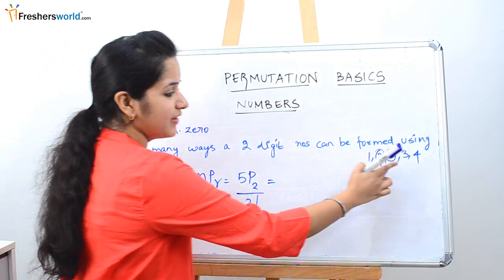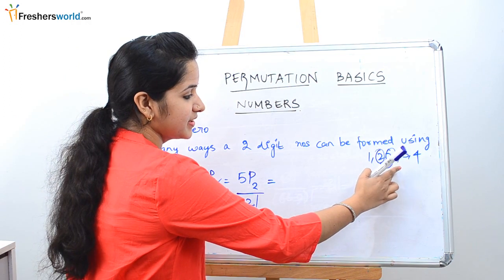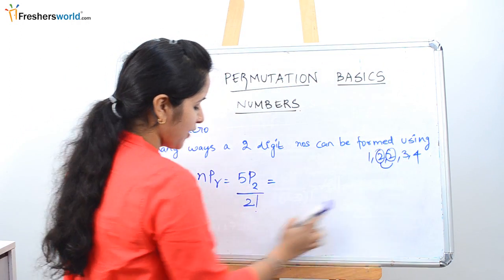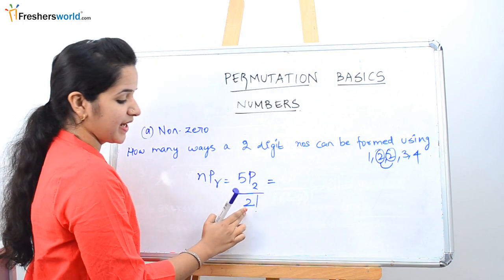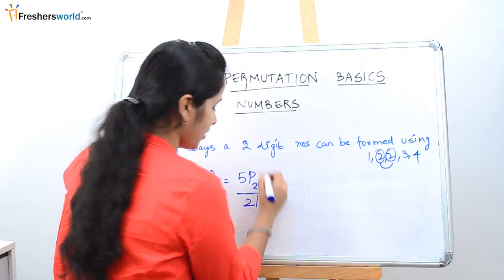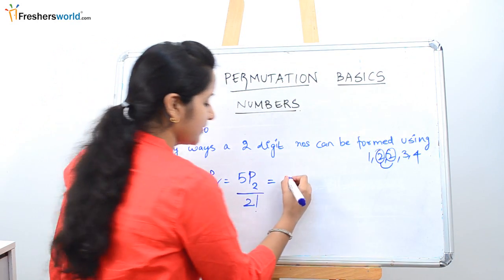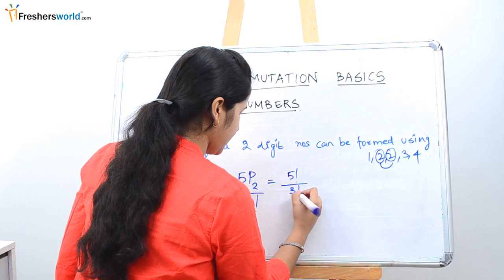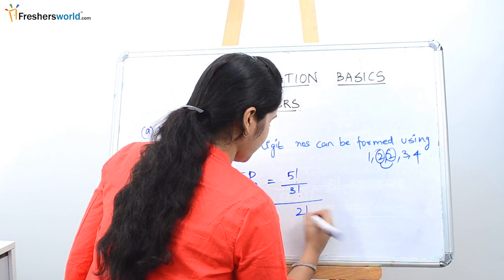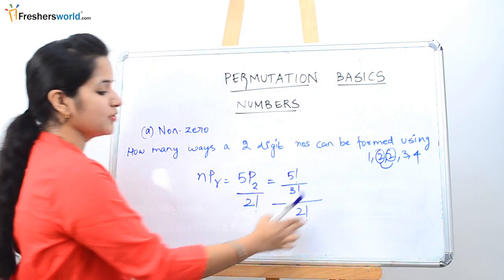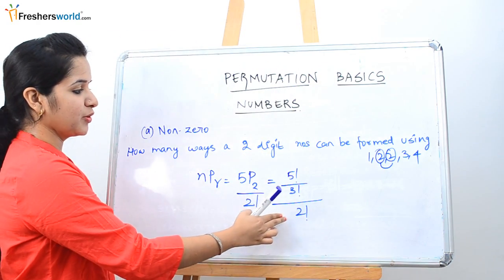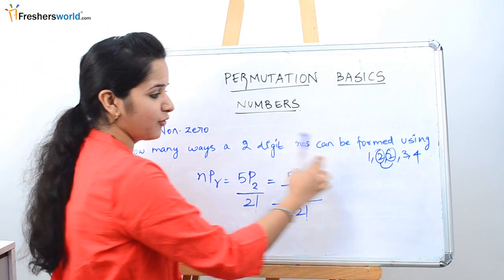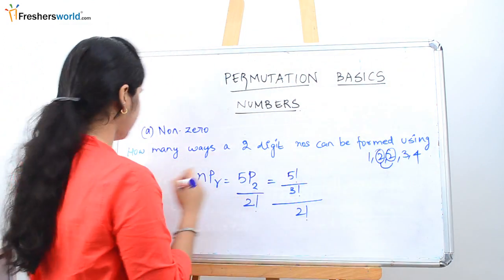This is the key rule: when you have repeated numbers, however many times the repeated number appears, you divide by that factorial in the denominator. So solve it as 5 factorial divided by 3 factorial, then divided by 2 factorial. Once you solve this, you will know the number of ways a two-digit number can be formed using those five numbers.